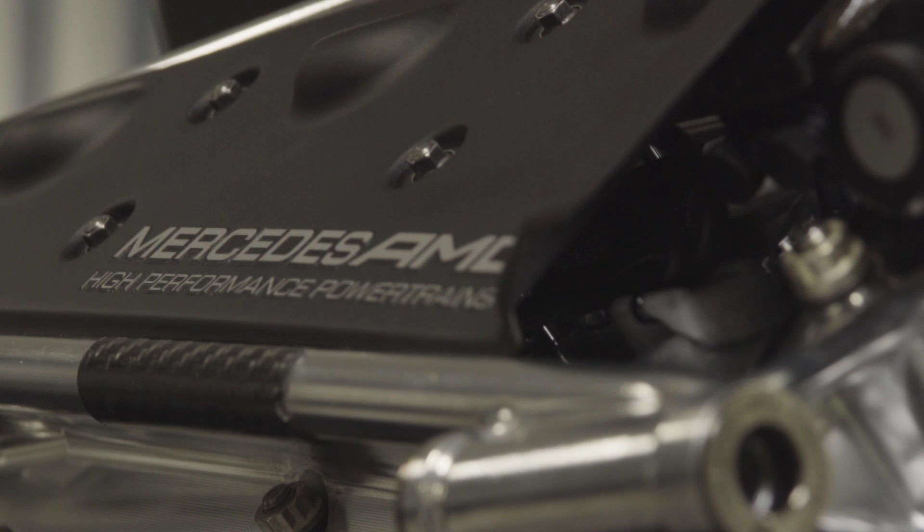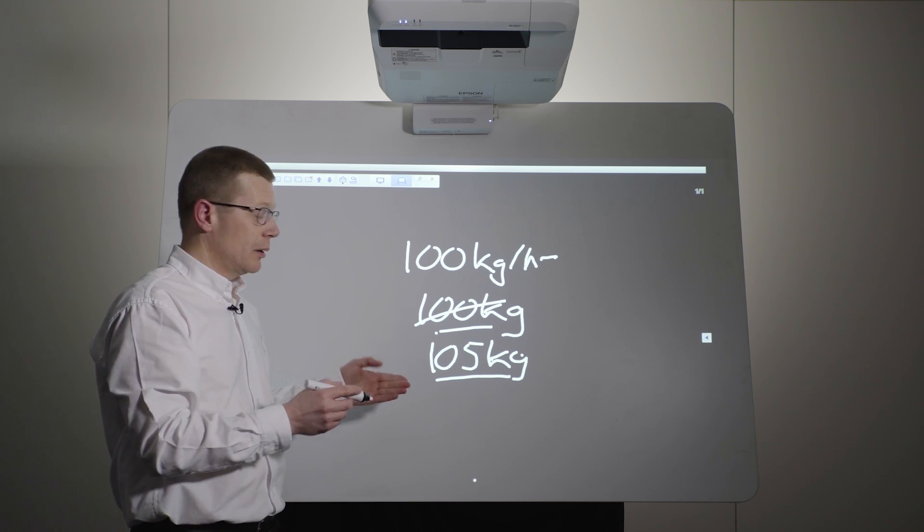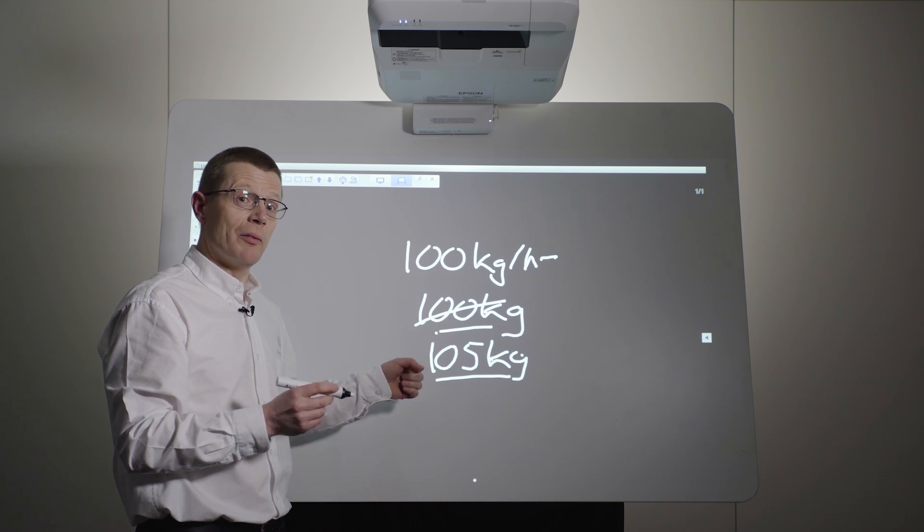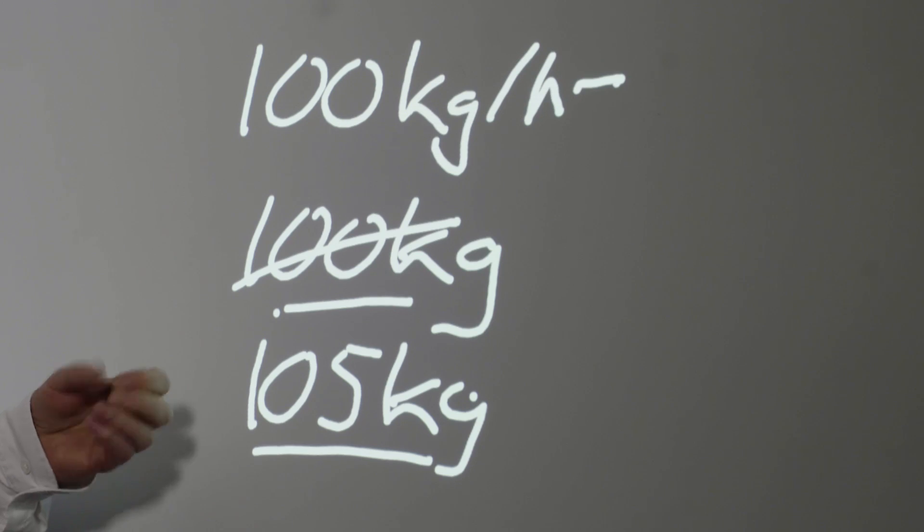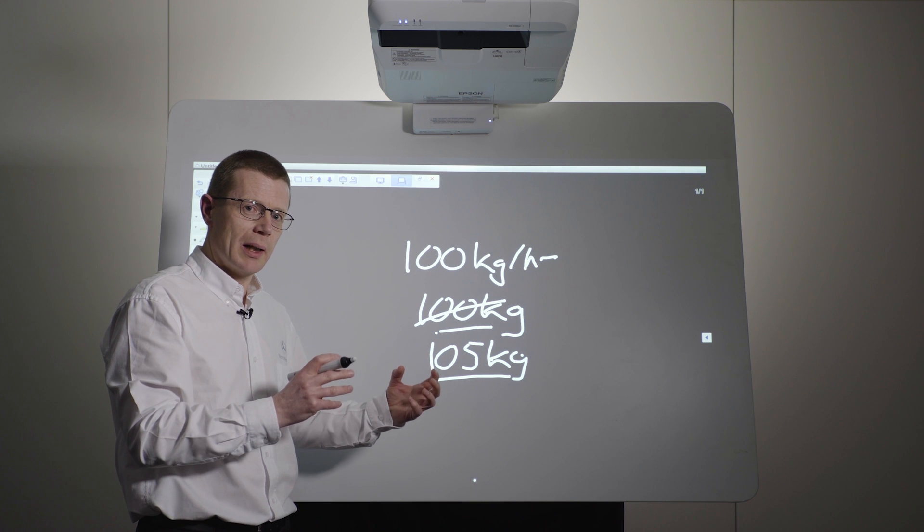So that's a major change for the power unit. One of the consequences of having an extra 10% of fuel, 5 kilos available, an extra 10% used per lap is that the waste energy, the engine's very efficient but it's not 100% efficient. So there is some waste energy.